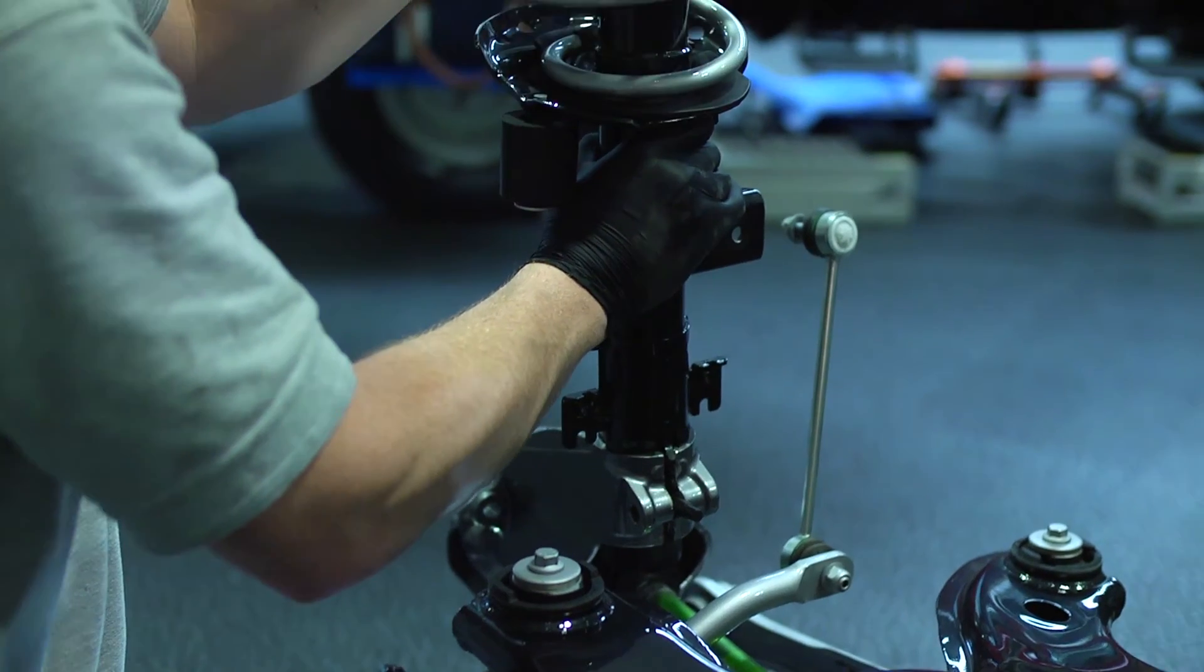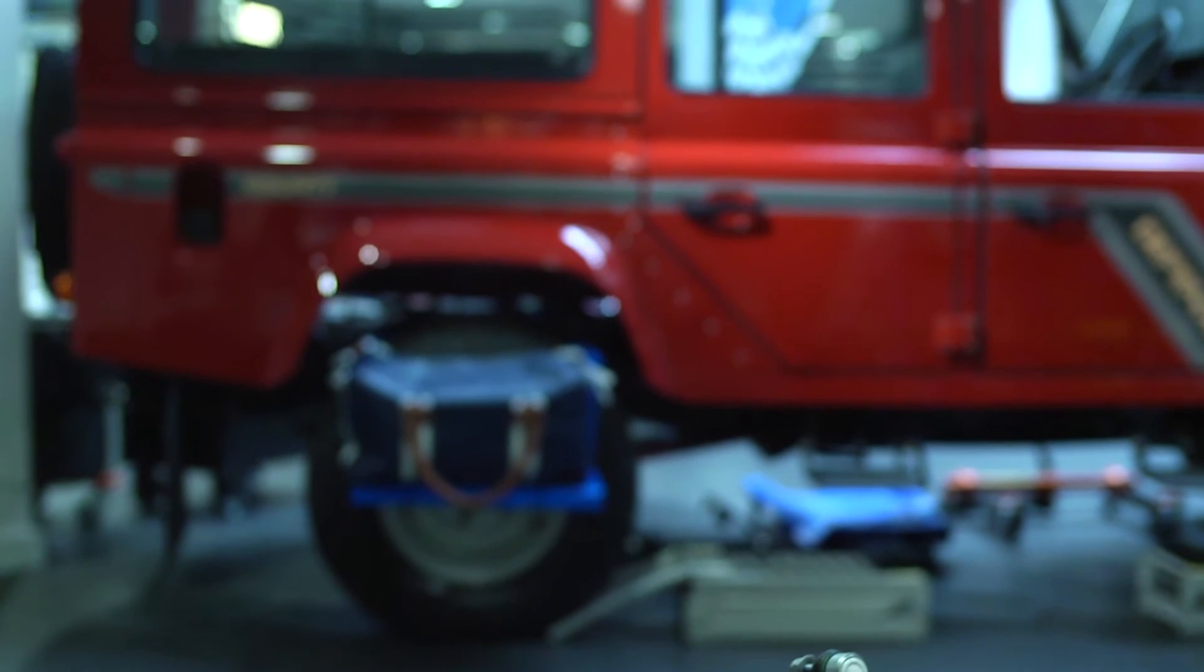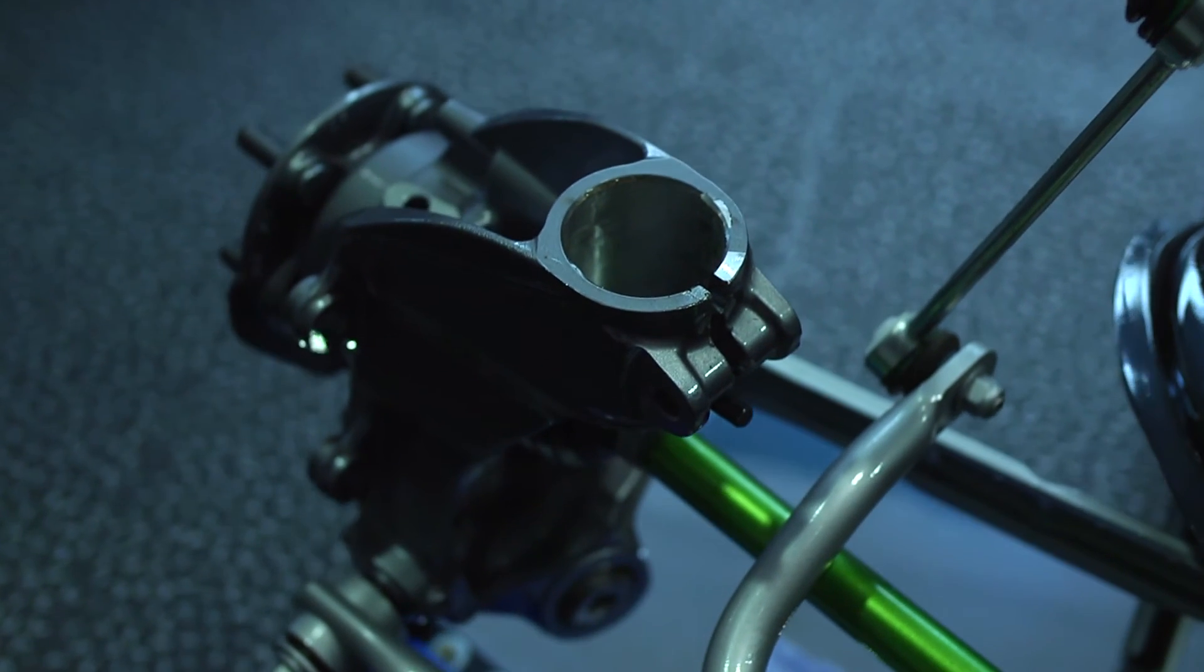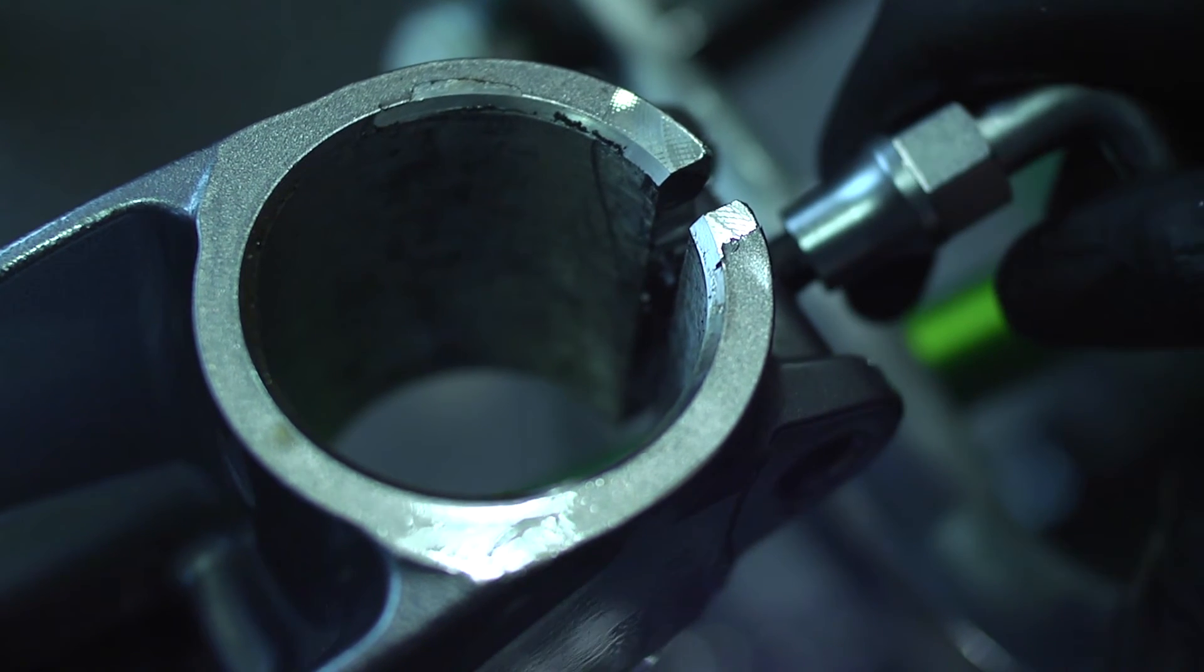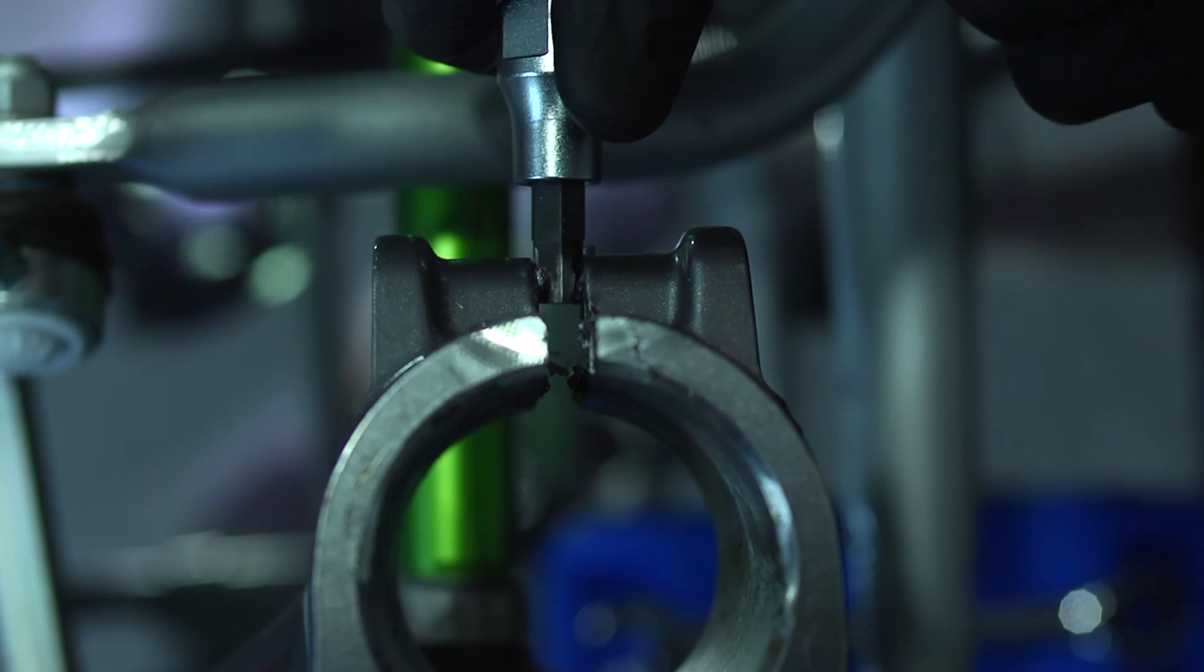To see this more clearly we'll demonstrate on this display suspension unit. Simply turning the separator bit expands the clamp. A simple idea that really helps with what can be a very awkward job.